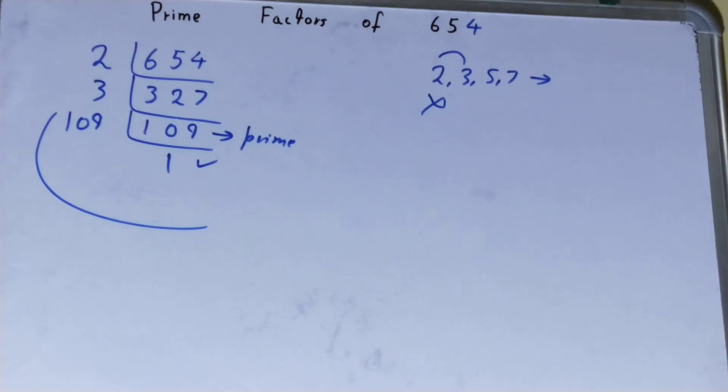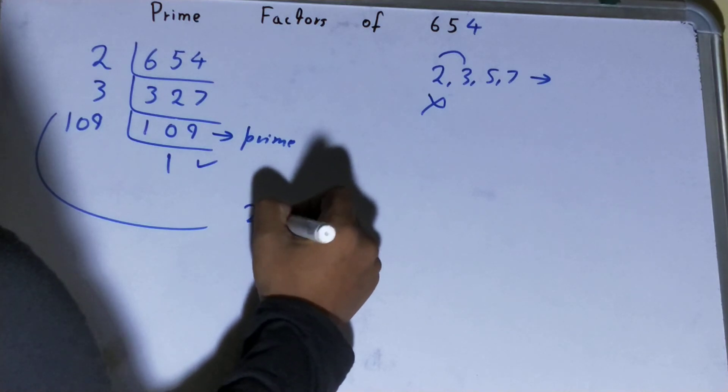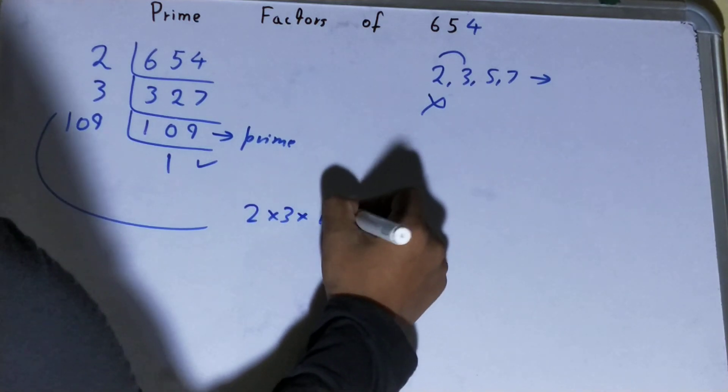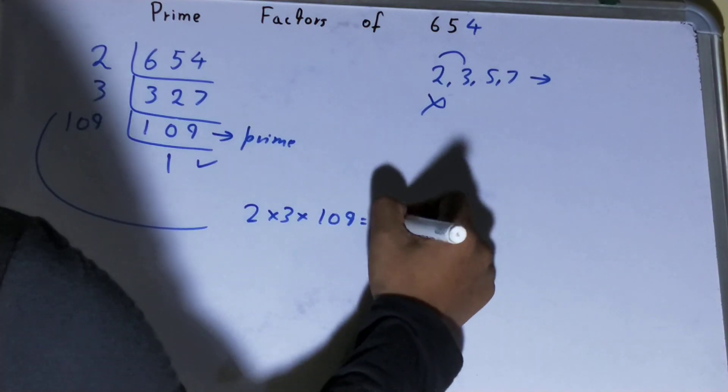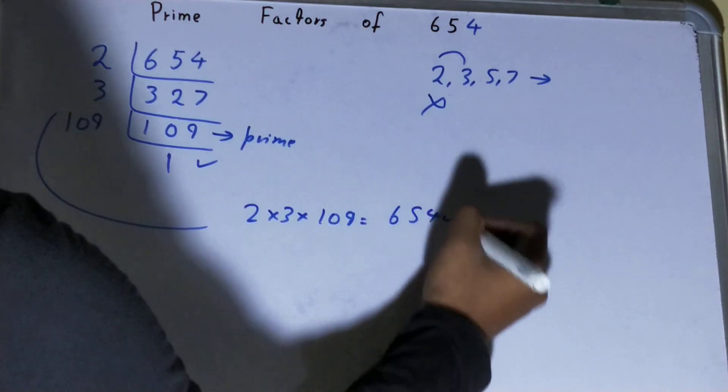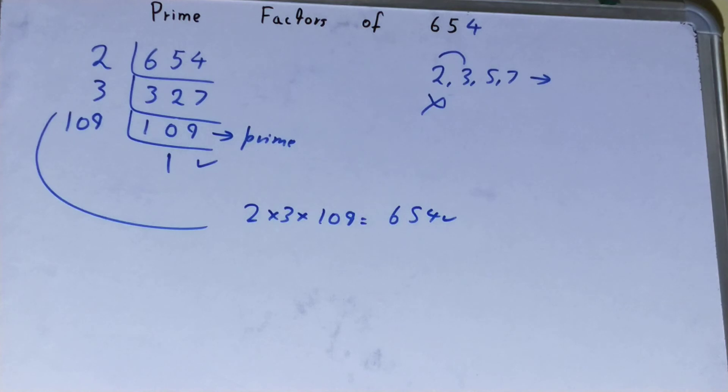Whatever you have on the left-hand side will be the prime factors of the number 654. That is 2 × 3 × 109. Now, if you want to check whether it is right or not, you can multiply it. If on multiplying you get the number back again, that means your calculation is correct. If not, you need to recheck.